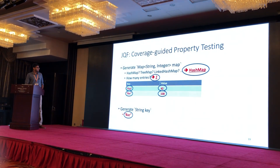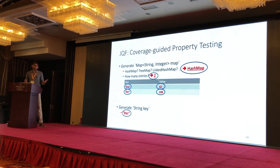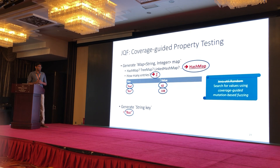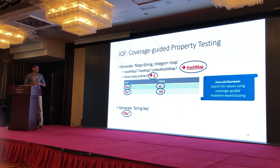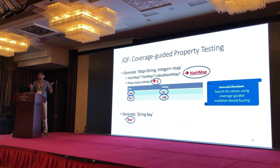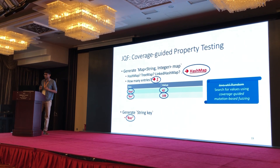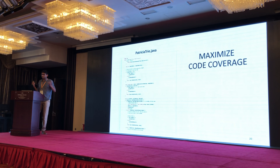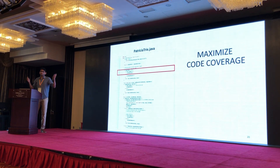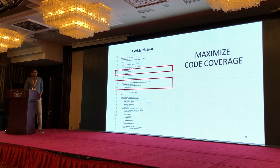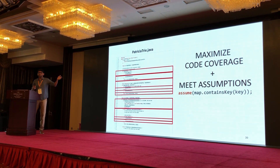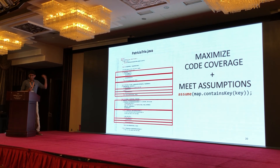What JQF does is say: you generated these inputs randomly, but you didn't get any feedback from the program as to whether the inputs were good or not. So instead of making those choices at random, we search using well-known techniques like coverage-guided fuzzing with mutations. We remember what choices we've made in the past, make changes to those choices, get feedback from the program in the form of code coverage, and perform evolutionary search to find better inputs. The idea is to maximize code coverage — so for Patricia trie, which has various branches, we want inputs that execute all those branches. We also want inputs that satisfy the assumptions with high probability. That's exactly what JQF does.